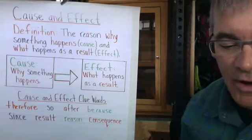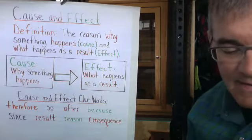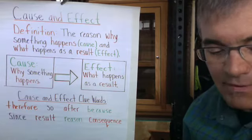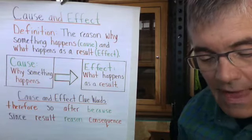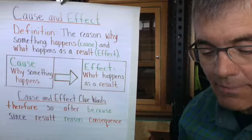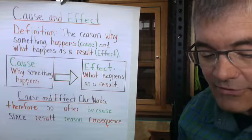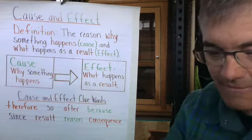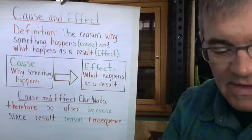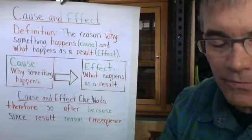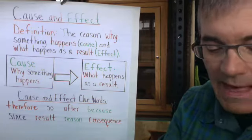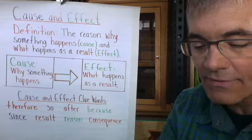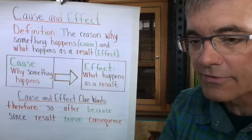The definition of cause and effect is the reason why something happens, which is the cause, and what happens as a result, which is the effect. The keywords are cause — why something happens — and effect — what happens as a result.